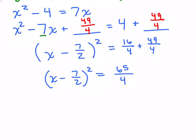Now we're ready to use the square root property. I can take the square root of both sides, and be careful here. Remember, when you take the square root of something squared, the x minus 7 halves, you have to put a plus or minus in front of what's on the right-hand side of the equation. So I have plus or minus.